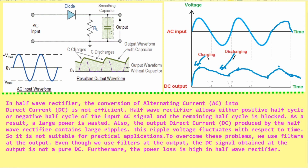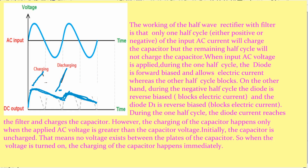Even though we use filters at the output, the DC signal obtained is not a pure DC. Furthermore, the power loss is high in a half-wave rectifier. In a half-wave rectifier, only one half cycle — either positive or negative — of the input AC current will charge the capacitor, while the remaining half cycle will not. During the positive half-cycle, the diode is forward biased and allows electric current, whereas the other half blocks electric current.